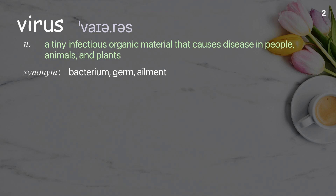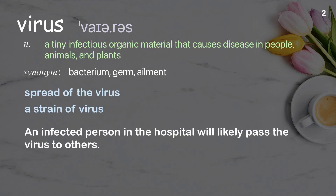Virus: a tiny infectious organic material that causes disease in people, animals, and plants. Examples: spread of the virus, a strain of virus. An infected person in the hospital will likely pass the virus to others.